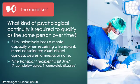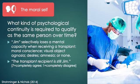In study one of their research project, participants read a vignette in which Jim selectively loses mental capacities: moral conscience, visual object agnosia, desires, amnesia, or none—the control condition. They then responded to the dependent measure: 'The transplant recipient is still Jim. How much do you agree or disagree?' with anchors of seven for completely agree and one for completely disagree.